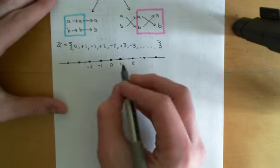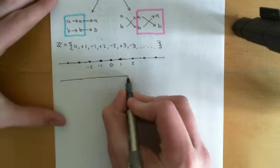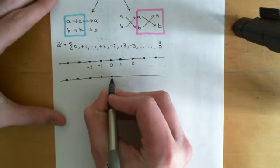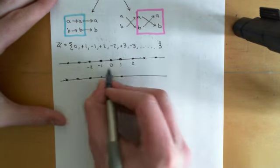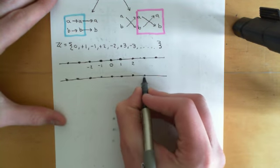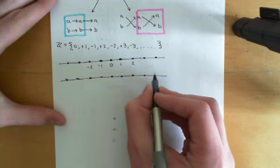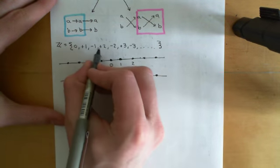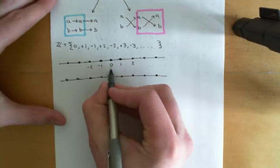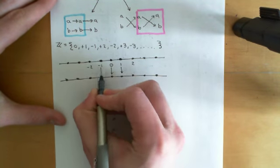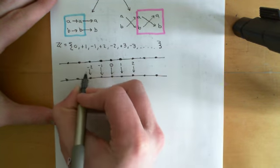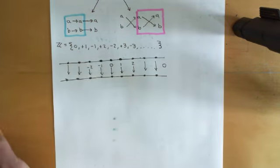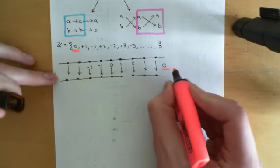First, let me define what zero is going to be. Zero is going to be the identity map. I'll draw the set back again now, abandoning the symbols to avoid confusion between the group symbols and the labels for points in the set. Zero, in this group of integers under addition, represents the set permutation where every point goes to itself — it's the identity map.